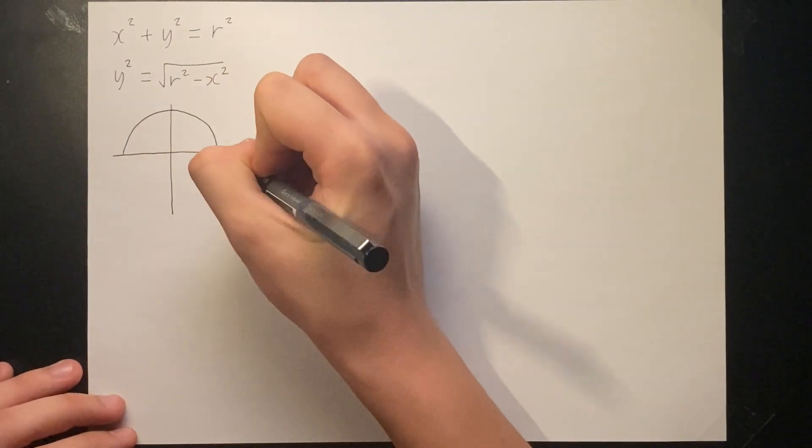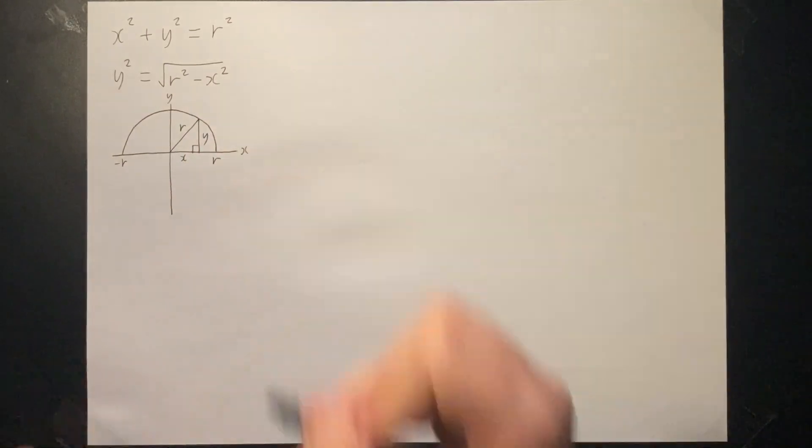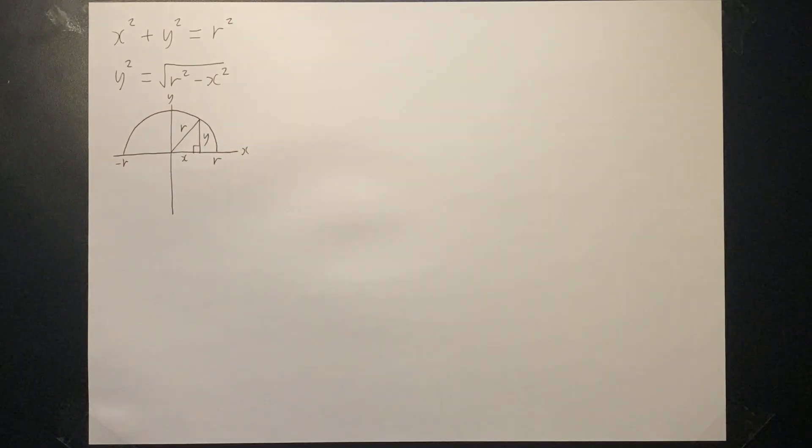Note that we ignore the negative part of the function as we only need the positive part. The graph of the function is a circle with radius r.